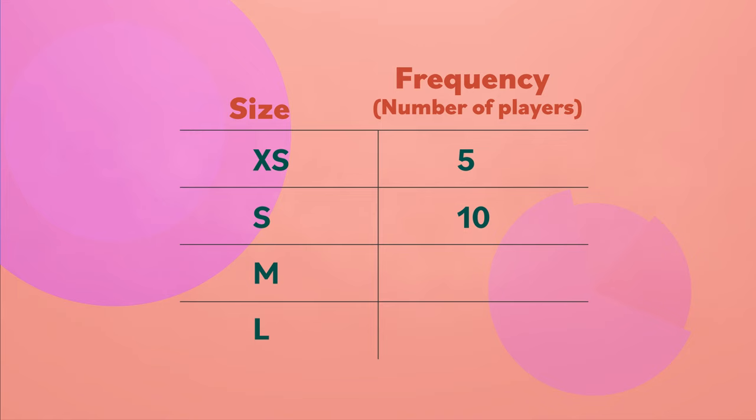Five athletes wear an extra small. Ten prefer small. Twenty-six for medium, and nineteen for large. Adding up these numbers gives us the total number of players on the girls' teams. Sixty.